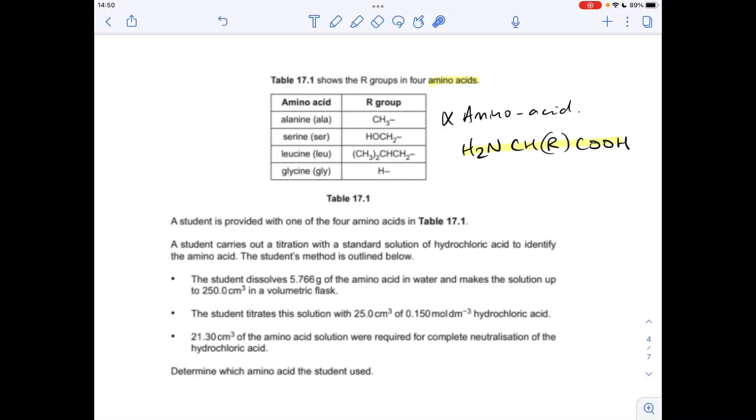OK, so the first thing I want to mention is the general formula for alpha amino acids. We've got this general formula here with a variable R group. The whole purpose of the calculation is to work out which amino acid was involved in the titration.